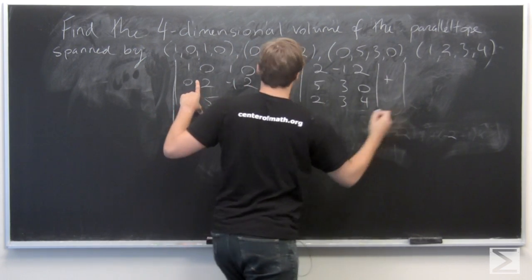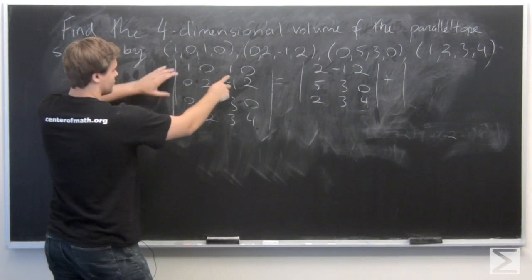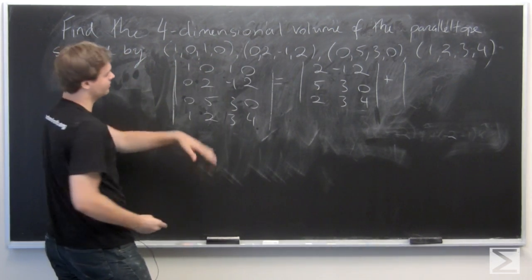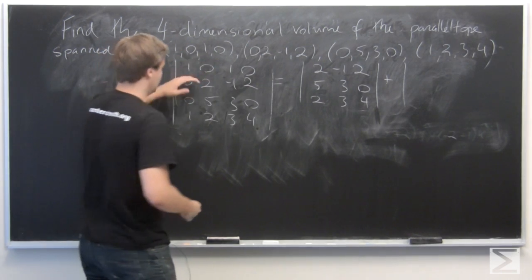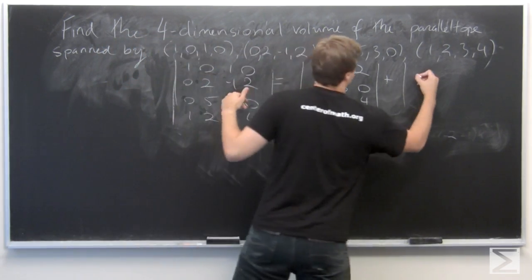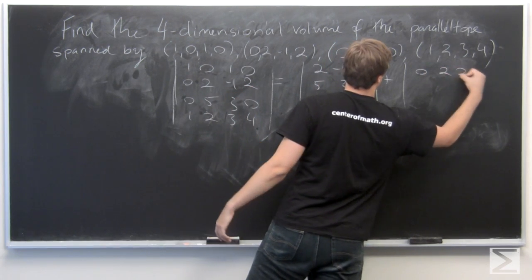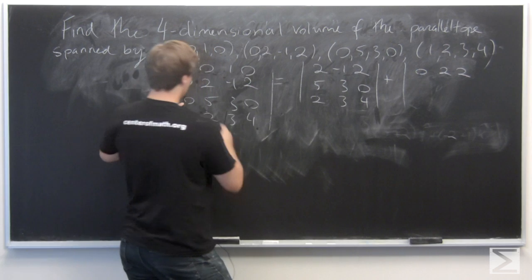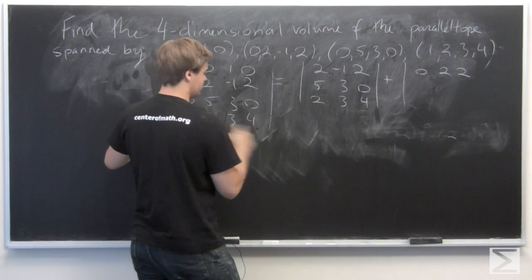Plus the determinant of the 3 by 3 matrix given by throwing away this middle column and the top row, which is going to be 0, 2, 2; 0, 5, 0; and 1, 2, 4.